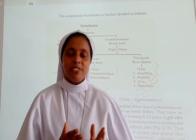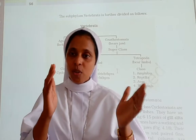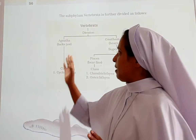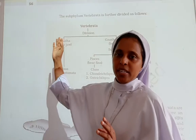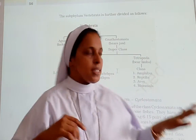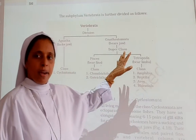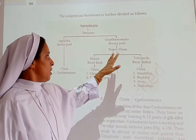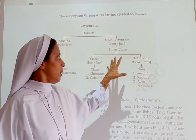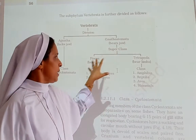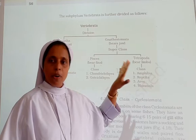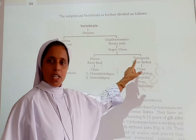In the previous class we have seen how vertebrates are classified. It is divided into Agnatha as well as Gnathostomata — that which bears jaws and that which doesn't bear jaws. Gnathostomata is again divided into Pisces as well as Tetrapoda, and we have learned the short form of Tetrapoda.